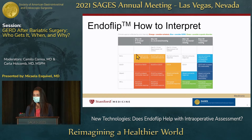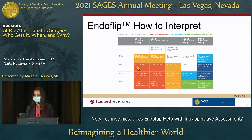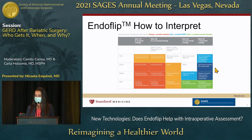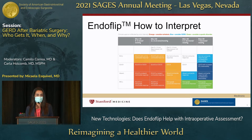Looking at the left column, a distensibility of 0 to 2 — quite low — with motility abnormalities is consistent with achalasia, more severe achalasia shown in darker orange. On the right side of the table, distensibility above 9, even with some motility abnormalities, may predispose patients to worsening reflux — not necessarily diagnostic, but something to keep high on your suspicion.